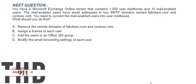Next question: you have a Microsoft Exchange Online tenant that contains 1,000 user mailboxes and 10 mail-enabled users. The mail-enabled users have email addresses in two SMTP domains named fabricant.com and contoso.com. You need to convert the mail-enabled users into user mailboxes. What should you do first? Option A: Remove the remote domains of fabricant.com and contoso.com. Option B: Assign a license to each user. Option C: Add the user to an Office 365 group. Option D: Modify the email forwarding setting of each user. The correct answer is Option A.